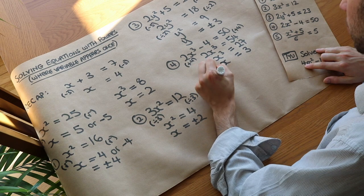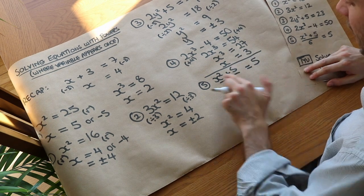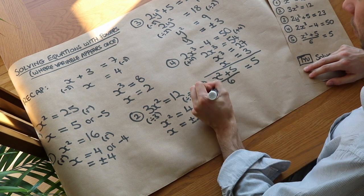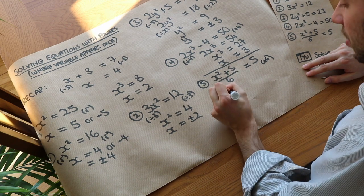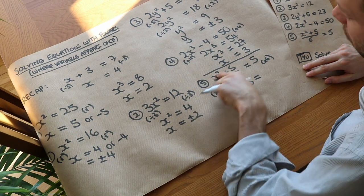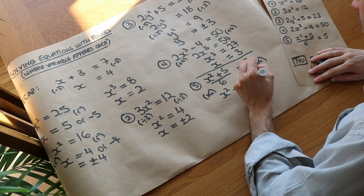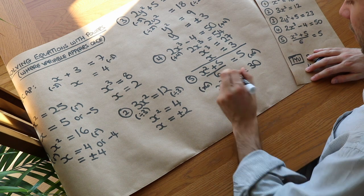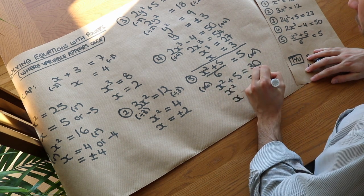Question 5: the quantity x squared plus 5, all over 6, equals 5. x is squared, then 5 is added, then divided by 6. Undo in reverse: multiply both sides by 6 — this gets rid of the denominator, leaving x squared plus 5, and the right side becomes 30. A common mistake is to also multiply the numerator by 6, but multiplying by 6 simply cancels the division. Then subtract 5 from both sides to get x squared equals 25, and square root both sides: x equals plus or minus 5.